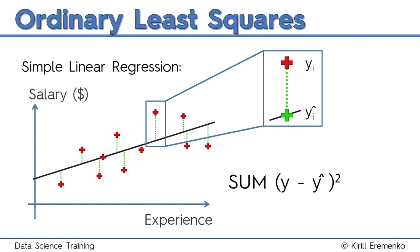To get the best fitting line, you take each one of those green line distances, square them, and then take the sum of those squares. Once you have the sum of squares, you find the minimum. Simple linear regression draws all possible trend lines through your data, counts the sum of squares every single time, and then finds the minimum. It looks for the minimum sum of squares and finds the line with the smallest sum of squares possible — that line is the best fitting line. This is called the ordinary least squares method.